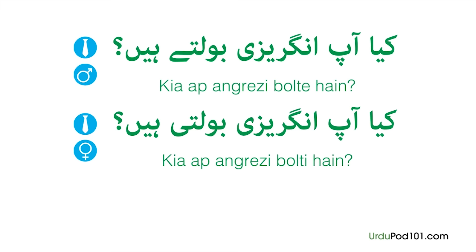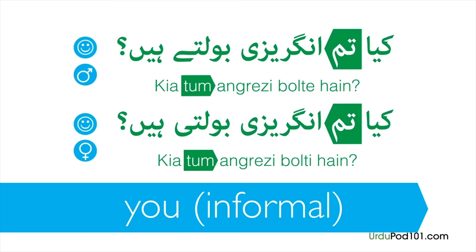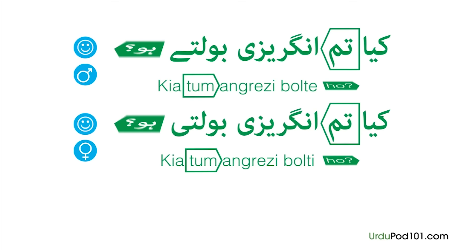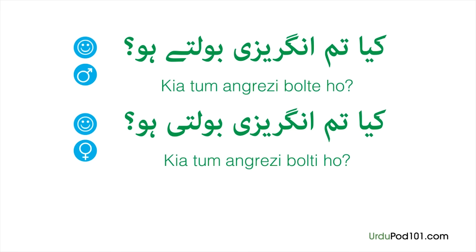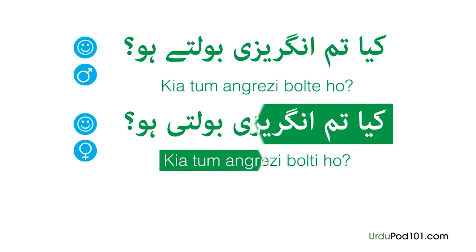Once more: when asking a man, it's Kya aap angrezi bolte hain? And when asking a woman, Kya aap angrezi bolti hain? Now let's make this sentence informal. We need to use the informal version of you, which is tum. If we change the word for you, we also change the sentence ending particle to ho. When speaking to younger people, it's acceptable to use this informal form. To ask a young man: Kya tum angrezi bolte ho? And when asking a young woman: Kya tum angrezi bolti ho?